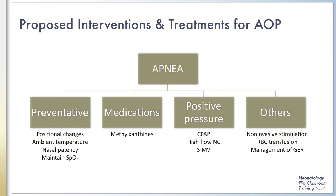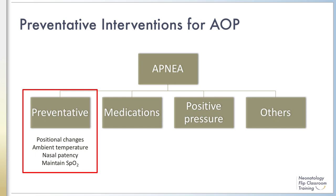Treatments should be considered when apneic events are frequent, prolonged, associated with significant bradycardia, or require intervention such as tactile stimulation or positive pressure ventilation. Preventative strategies include the avoidance of extreme flexion or extension of the neck to maintain patency of the upper airway, the provision of a stable thermal environment as temperature fluctuations can lead to apnea, maintenance of nasal patency as infants are obligate nasal breathers, and avoidance of hypoxia which can lead to severe desaturation episodes.